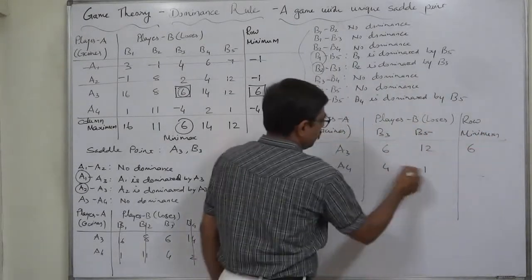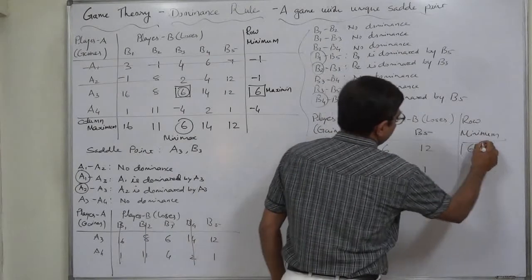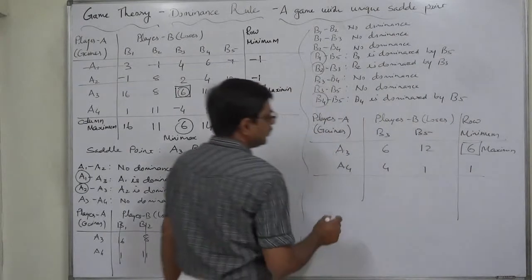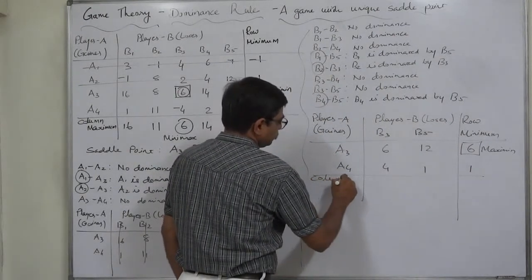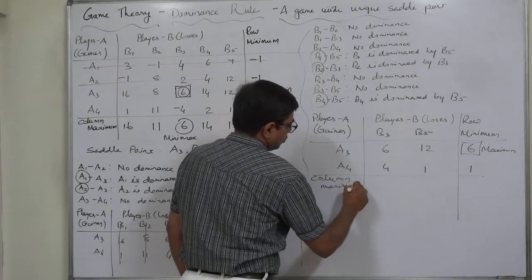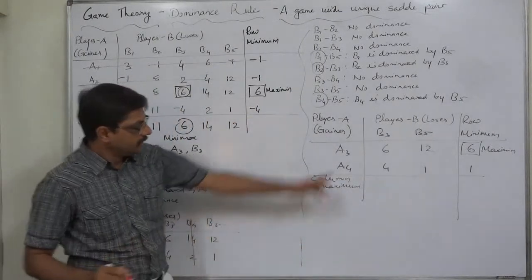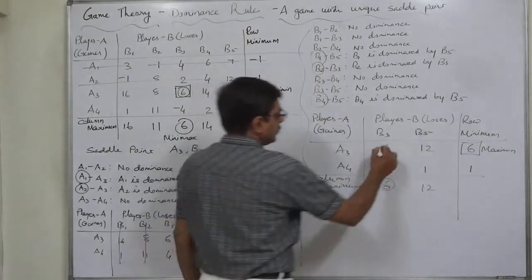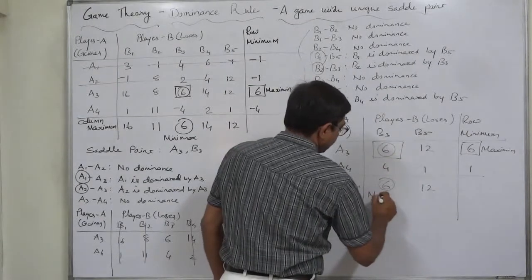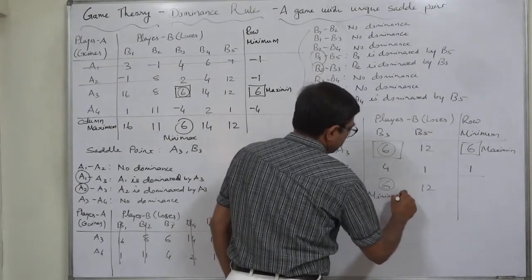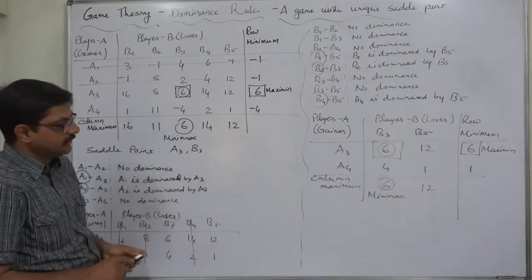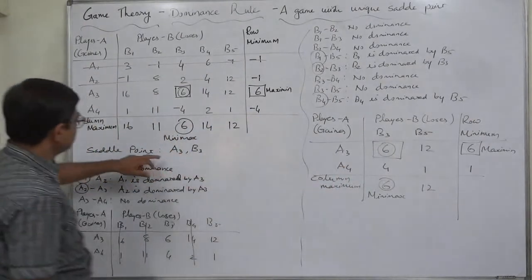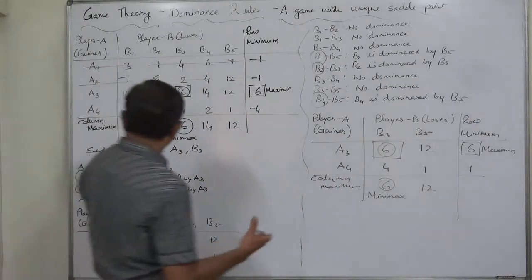The new 2×2 game has only two strategies B3 and B5 for Player B, and only two strategies A3 and A4 for Player A. The payoff values are: 6, 4, 12, 1. Checking the saddle point: row minimums are 4 and 1; maximin is 4. Column maximums are 6 and 4; minimax is 4. Wait — row minimum of A3 is 4, row minimum of A4 is 1; maximin is 4. Column maximums are 12 and 4; minimax equals maximin equals 6, confirming a saddle point at A3, B3.